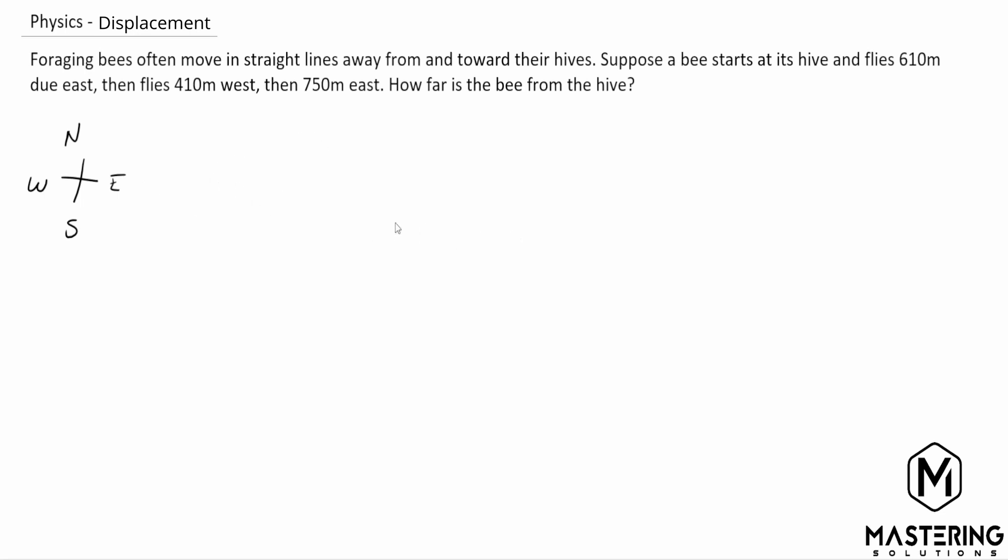And what they say, of course, is that we have bees. So we have a beehive here that looks like a turd. And then if we have the bees, they move in straight lines away from their hive.